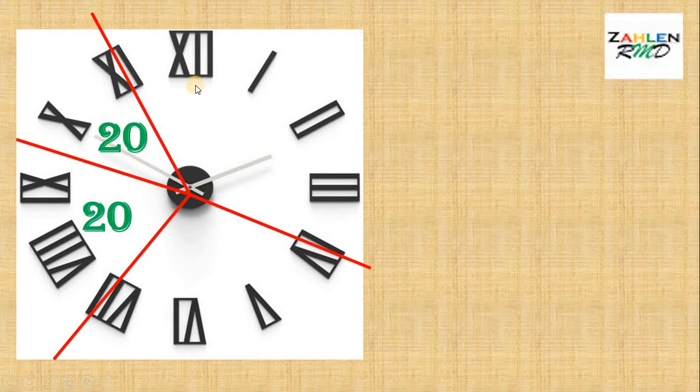Now, let's count this piece. So, we have 1 plus 10 is 11, 12, 13, 14, 15, 16, 17, 18, 19, and it is 20.